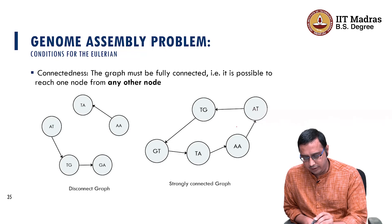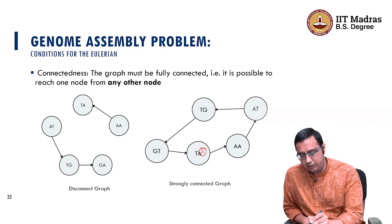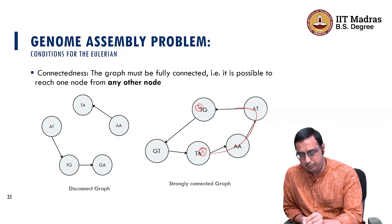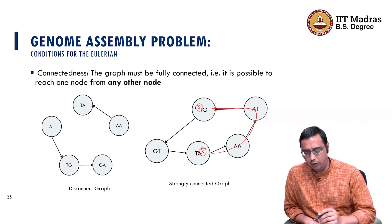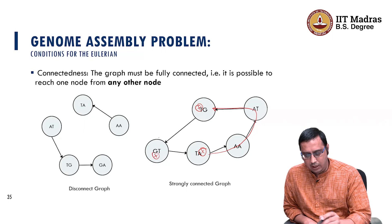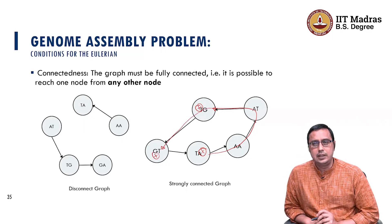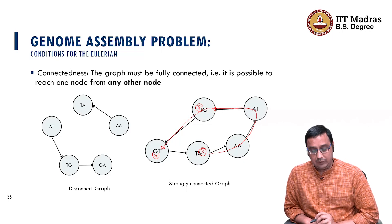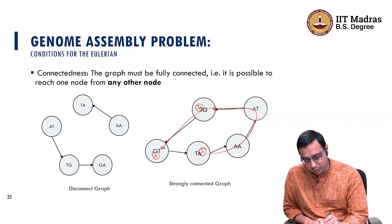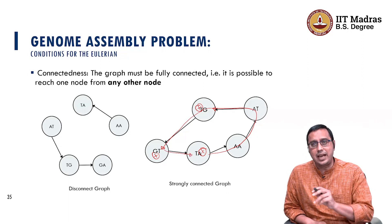Looking at this particular graph, if I choose this particular node, I can reach another node by following this particular path. If I want to go to another node, I have to further walk and go to G2. Similarly, I can come back to the same node — this graph also has a cycle.